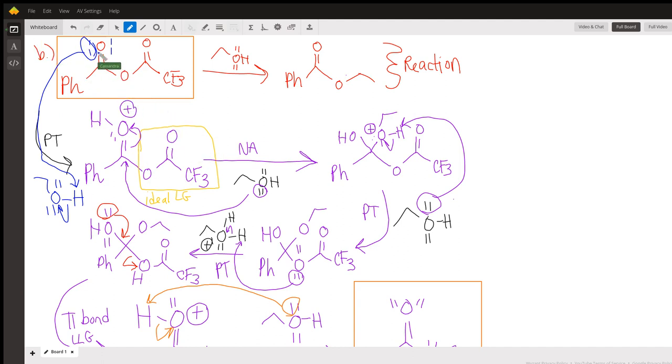So our alcohol will come in, it'll attack at that carbonyl location and kick up those pi electrons into that oxygen. That's what ends up creating this funky tetrahedral structure here.